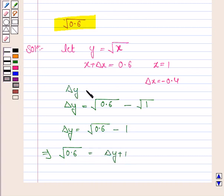And here we write that delta y is equal to under the root x plus delta x minus under the root x.